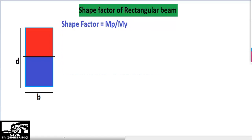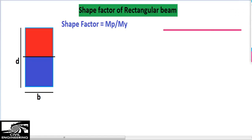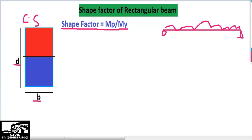Today we will take an example of a rectangular section of a beam. Here I draw a rectangular section of a beam. On the right side is a simply supported beam having roller and hinge supports with a uniformly distributed load on the beam. The cross-section of the beam is rectangular with width B and height D. The shape factor equals the plastic moment capacity divided by the yield moment capacity.